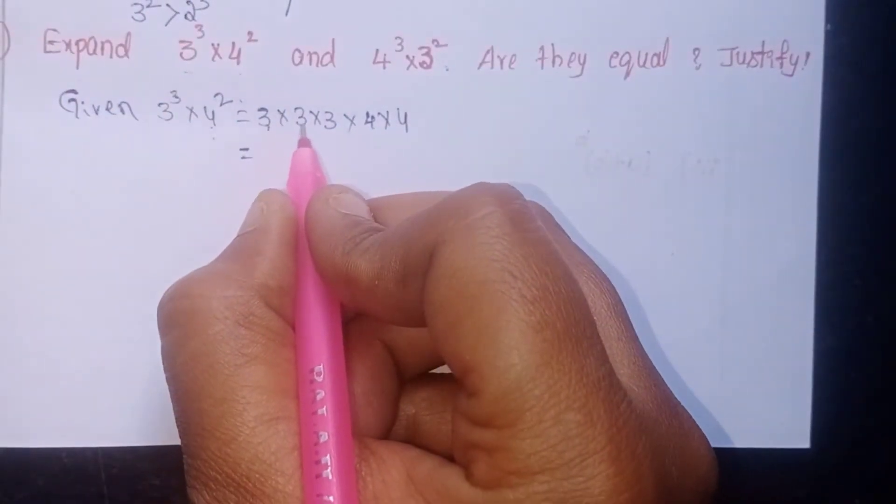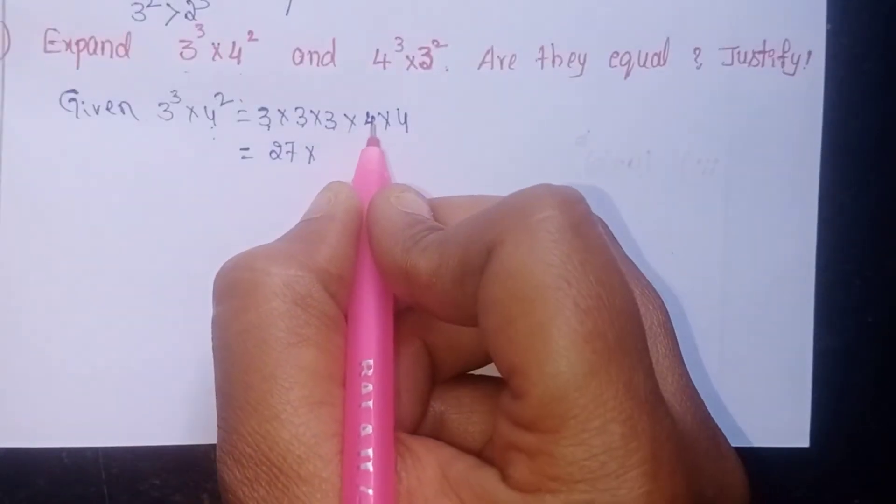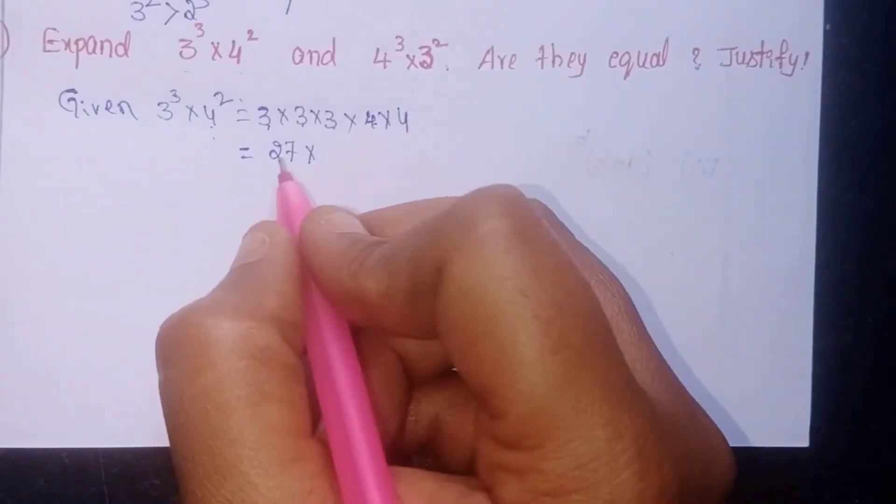3×3 is 9, 9×3 is 27. So 27 into 4²... and...